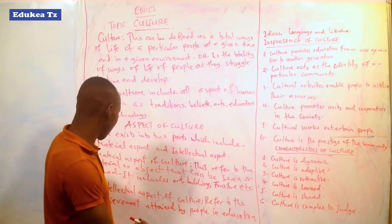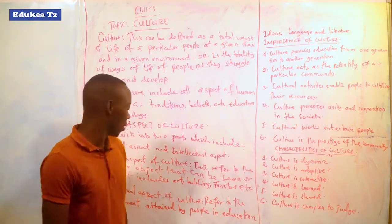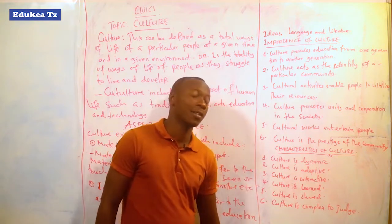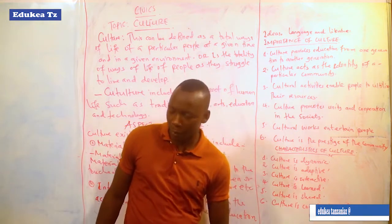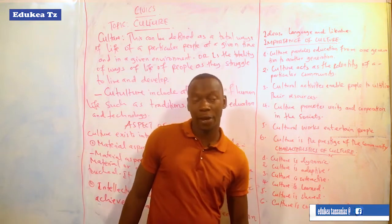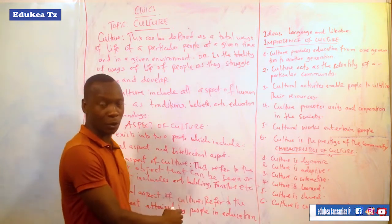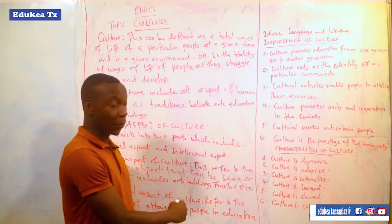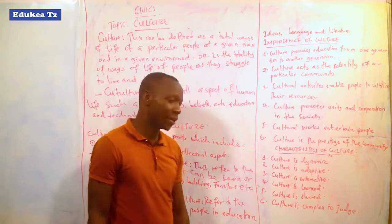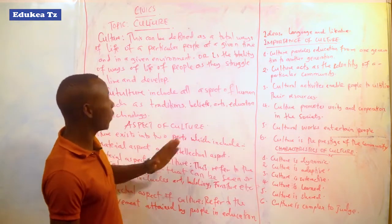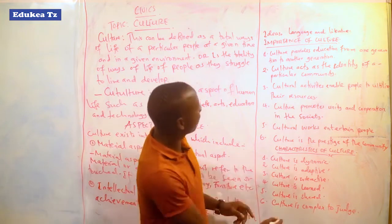The intellectual aspect of culture is the second aspect. This refers to achievements attained by people through education. It is the aspect of culture attained after a person attends class or gets informal education from parents or leaders. This education helps a person to transform from one stage to another stage in the community. The intellectual aspect of culture also includes ideas, language, and literature.